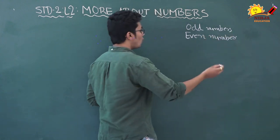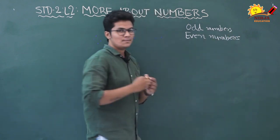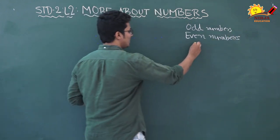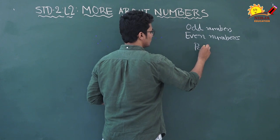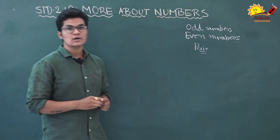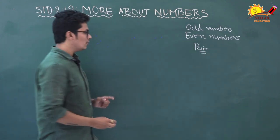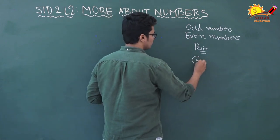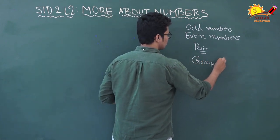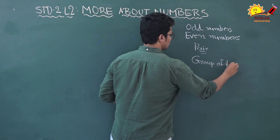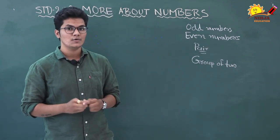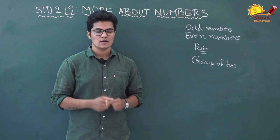So what are odd numbers and even numbers? Before we learn that, first we learn about 'pair'. Pair means a group of two. The objects that are in two are said to be in pairs.